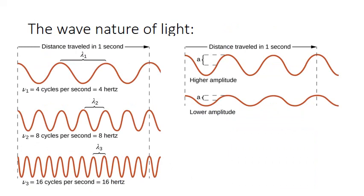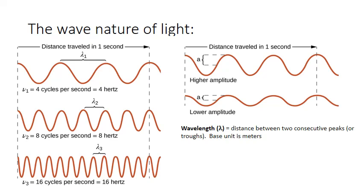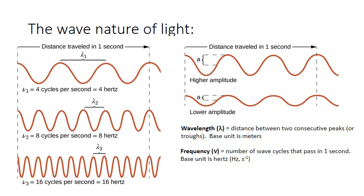Light behaves as a wave, and waves are regular oscillating patterns of movement that transmit energy. They can be characterized by wavelength, which we usually abbreviate with the Greek letter lambda. It stands for the distance between two consecutive peaks or between two consecutive troughs in the wave. The base unit for wavelength is usually meters. Waves can also be characterized by frequency, abbreviated with the Greek letter nu, which looks like a V in italics. Frequency is the number of wave cycles that pass by a given point in one second, and its base unit is hertz, abbreviated Hz, which essentially stands for cycles per second.